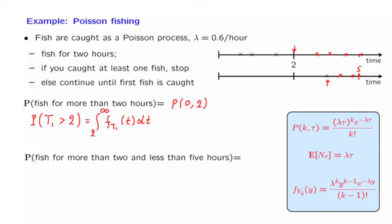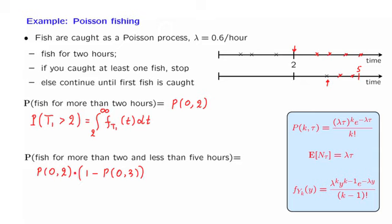So the event of interest consists of the intersection of two events: zero fish caught during the first two hours, and at least one arrival in the Poisson process between times two and five. This is a time interval of length three, and having at least one arrival equals one minus the probability of zero arrivals in a time interval of length three.